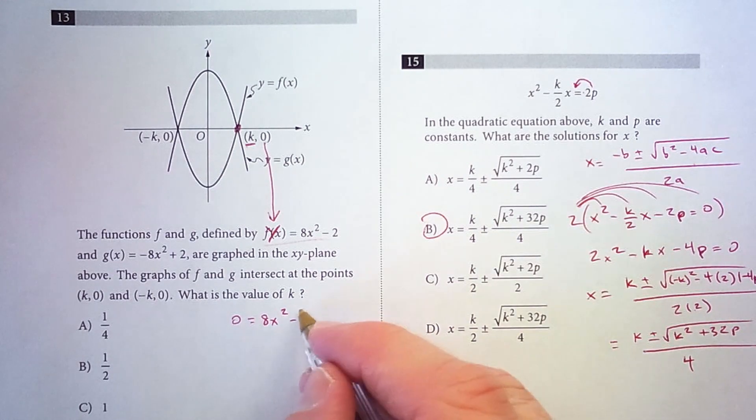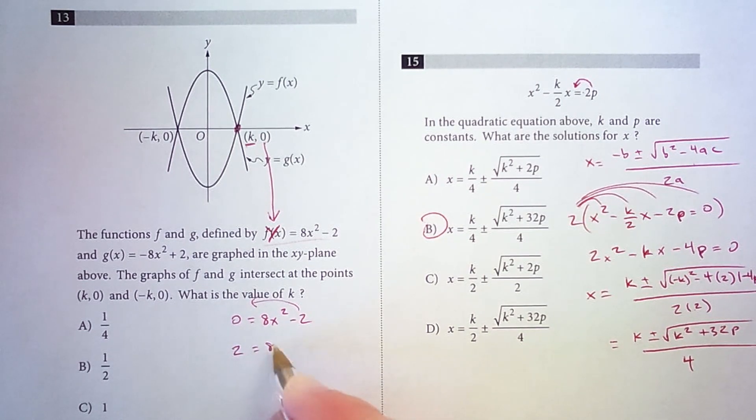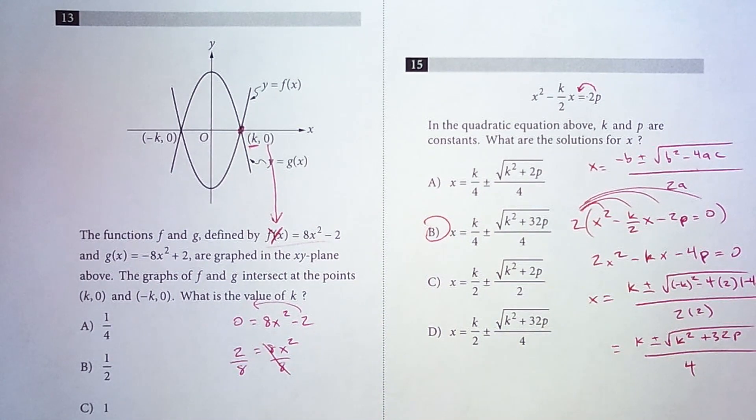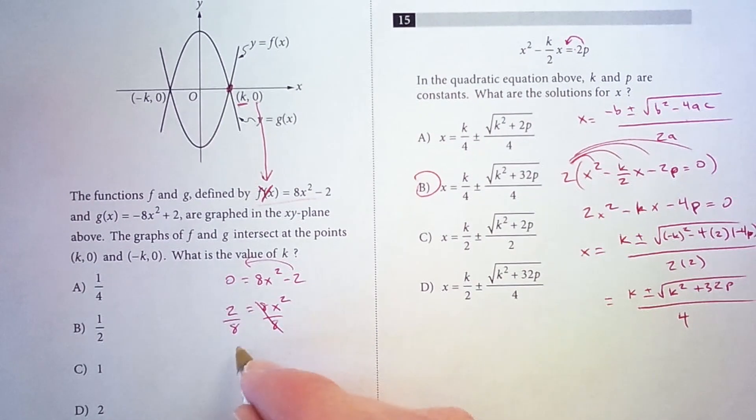So now I'm going to solve for x. When I move this negative 2 over, it becomes positive 2. And when I divide both sides by 8, cancel out this 8. And now I have 2 over 8, which is 1/4 equals x squared.